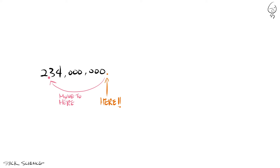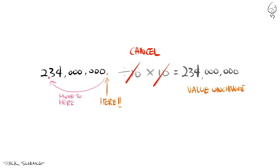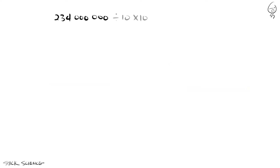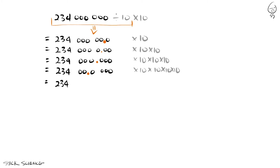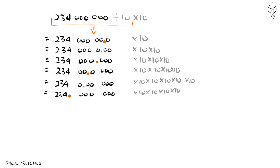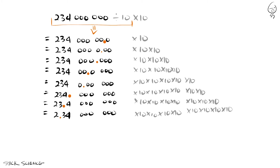To do this, we use a simple trick: divide by and then immediately multiply with 10. Since they cancel each other out, the final value stays the same at 234 million. But if we perform only the division and not the multiplication, we keep the same value while only moving the decimal point one place to the left. We repeat this trick until we reach the first digit, 2.